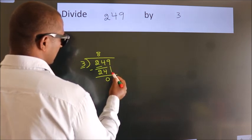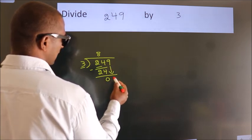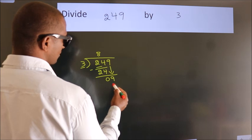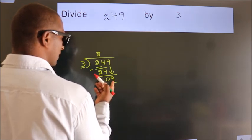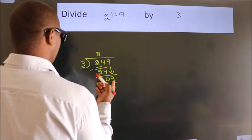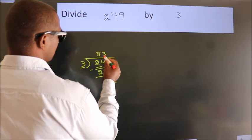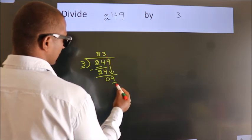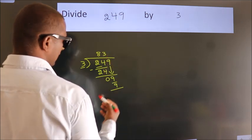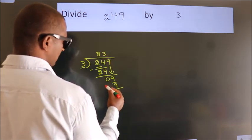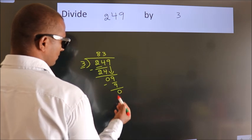After this, bring down the beside number. So 9 comes down — so 9. When do we get 9? In the 3 times table — 3 threes are 9. Now we subtract. We get 0.